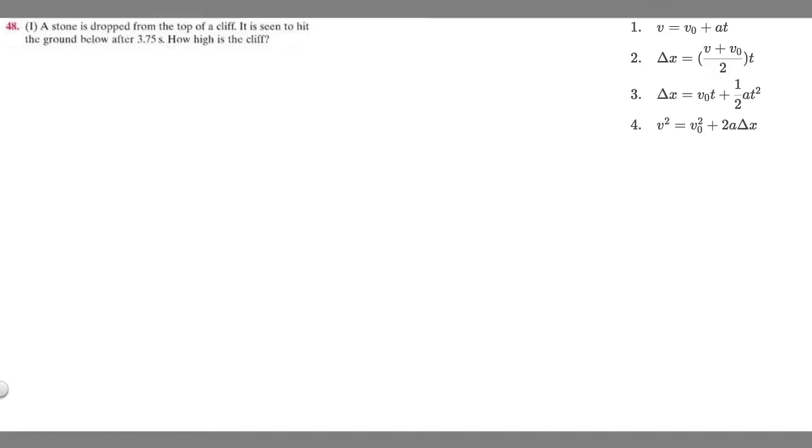In this problem, we're told a stone is dropped from the top of a cliff and hits the ground below at 3.75 seconds. How high is the cliff? This is going to be a free fall problem, so we're going to use the kinematic equations. But the difference from what you've been doing before is that acceleration when you drop something because of the force of gravity is going to be constant.